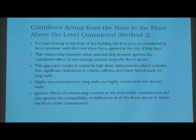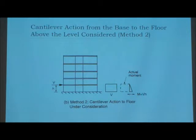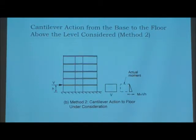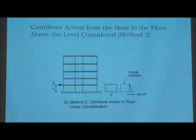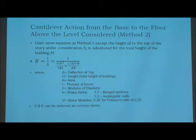Method 2 ignores the effect of the moments and other things at all other floor levels except for the level you're looking at. The picture shows where you're calculating: if you remember, Method 1 used the full height; this is just the height to the story above the level where you're calculating. You still have one load, and that gives your shear and moment diagrams — but as you can see, it's not your actual moment; it's a much lesser version. The equation is the same; the only difference is the height, calculated to above your story level rather than the full height. K values, shear modulus, and common terms are all the same.